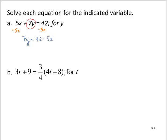Now, there's nothing wrong with this. However, it is common practice to write the variable term first. So I will rewrite this as 7y equals negative 5x plus 42.